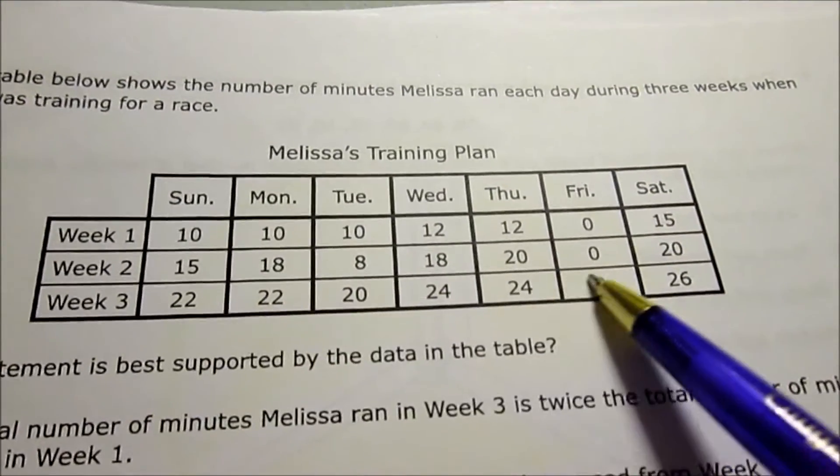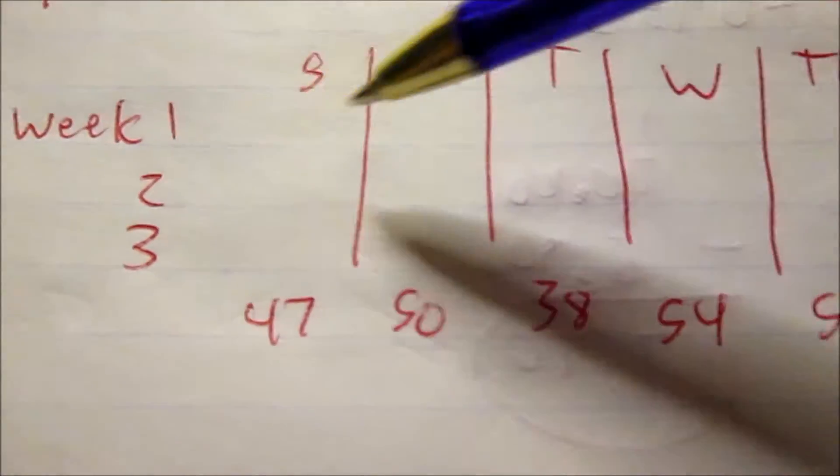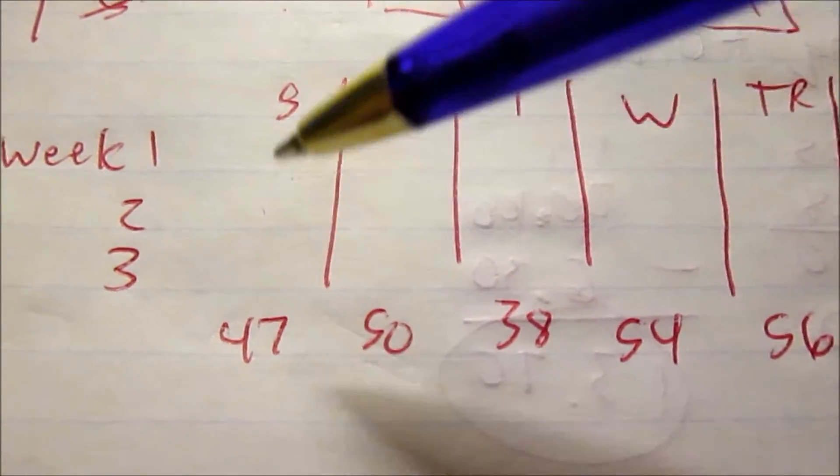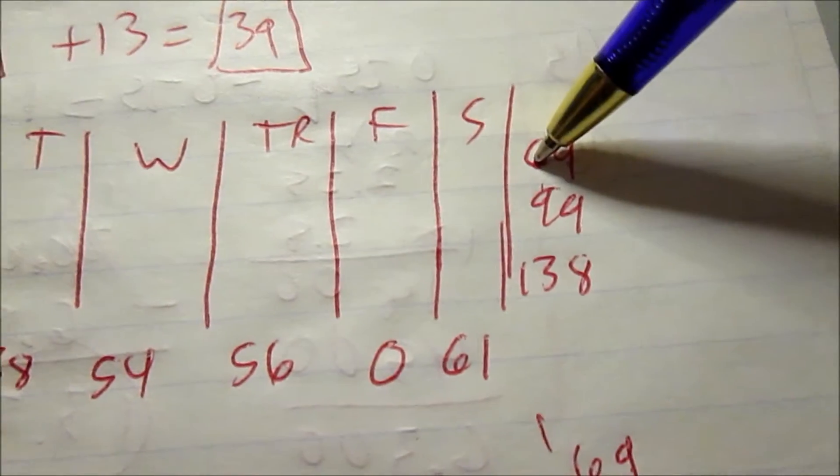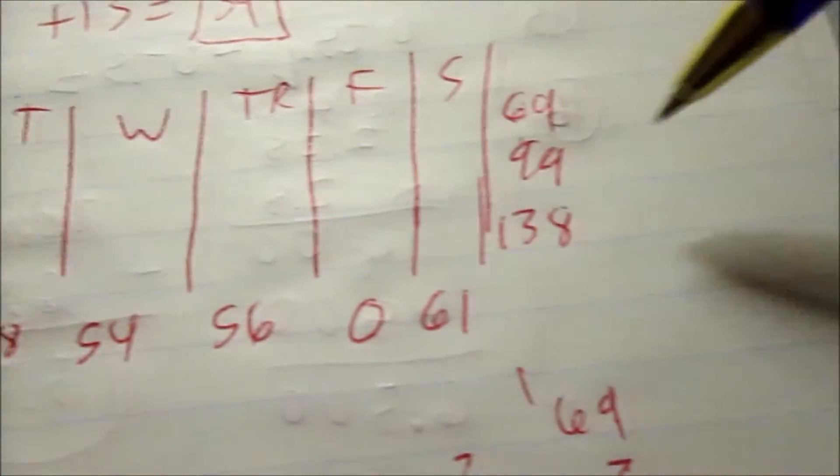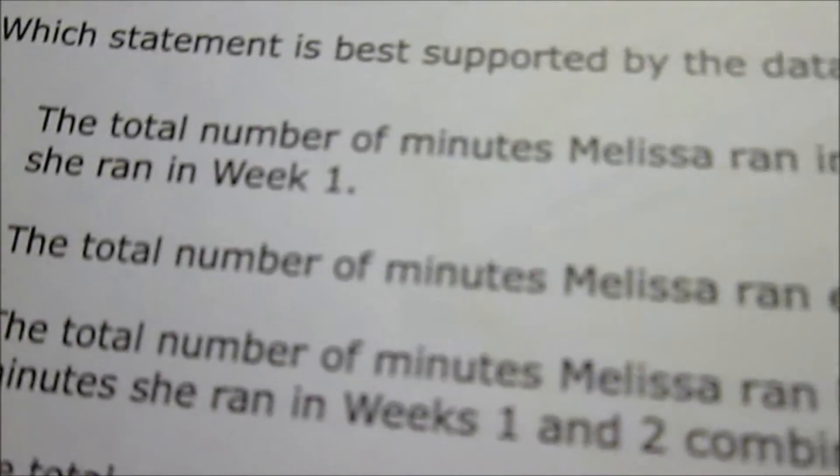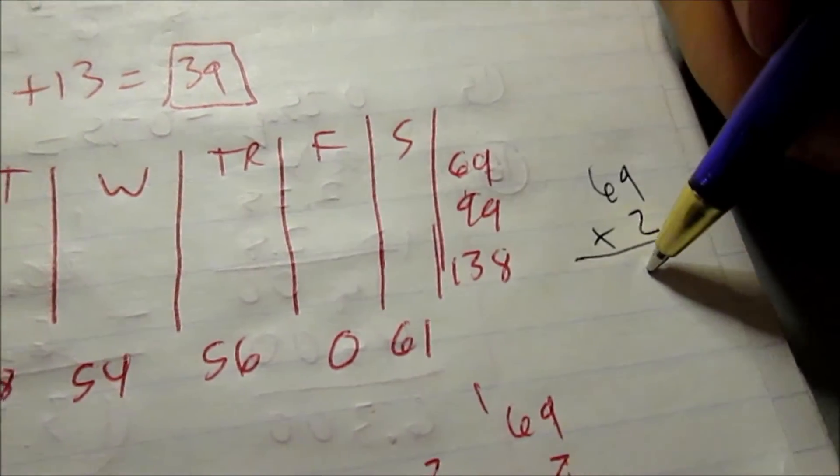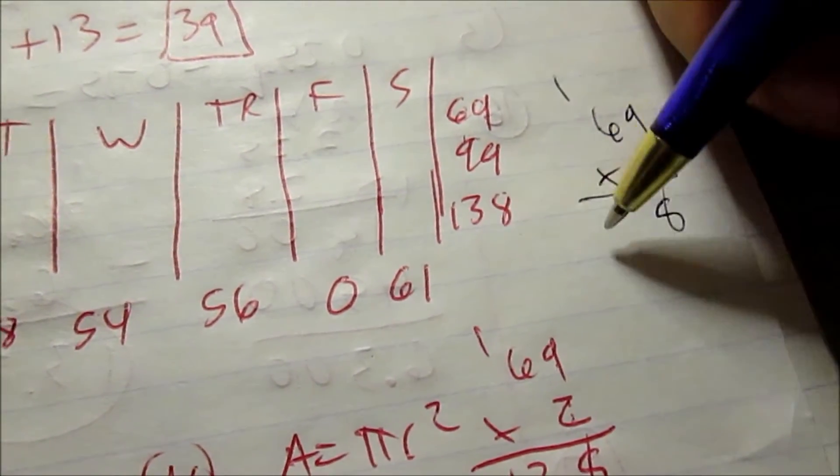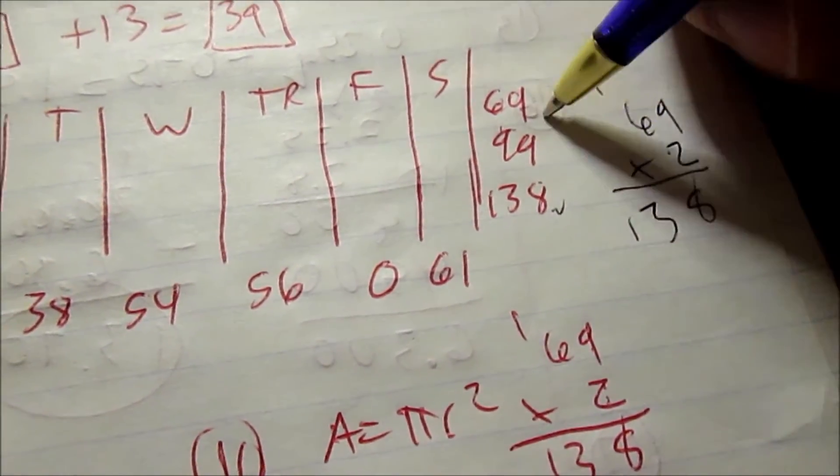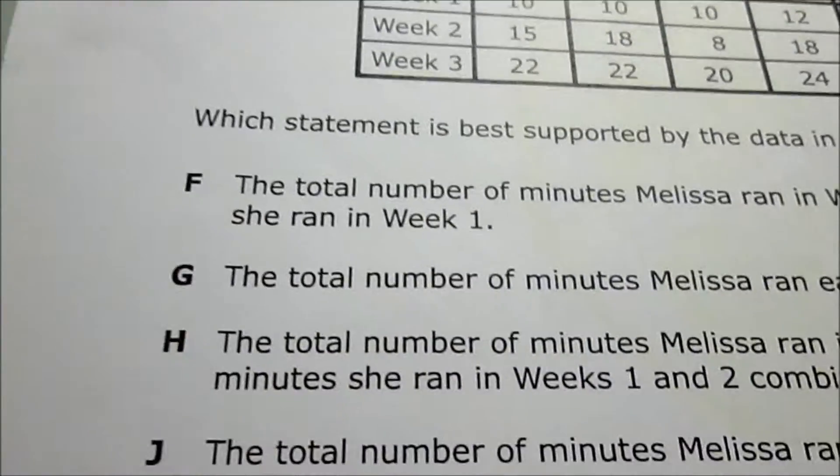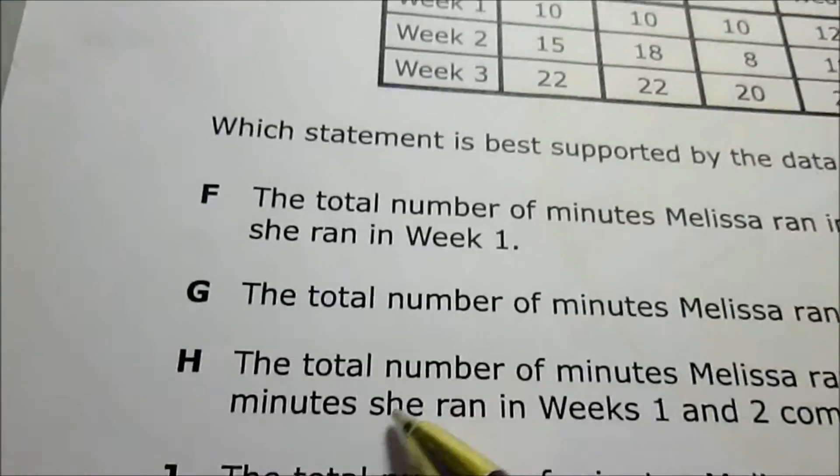F says the total number of minutes Melissa ran in week three is twice the total number of minutes she ran in week one. I need to look at week one and three totals. That means add all these across the row in week one and do the same thing with three. I've already done that on a separate sheet of paper. Week one total is 69 and week three is 138. 69 times two because it says twice: 69 times 2 is 138. So F is a good answer, it's probably the answer. I'll just make sure G, H, and J are not correct first.